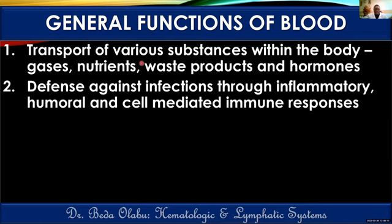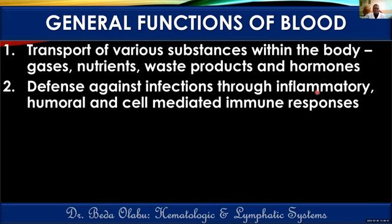Blood is also important in defense against infection. White blood cells fight infections through multiple mechanisms. Some primitive cells prevent infection through inflammation. B lymphocytes produce antibodies — that is humoral immunity. T cells, also lymphocytes, fight infected cells by killing them — that is cell-mediated immunity.